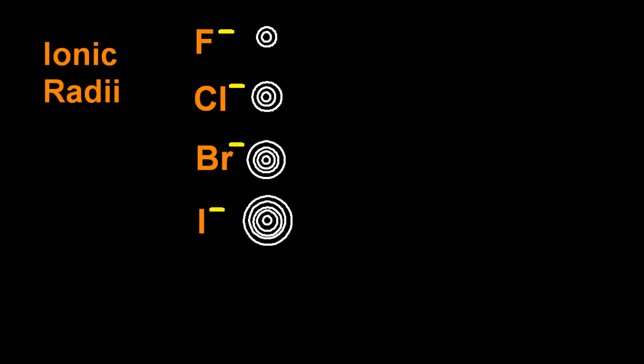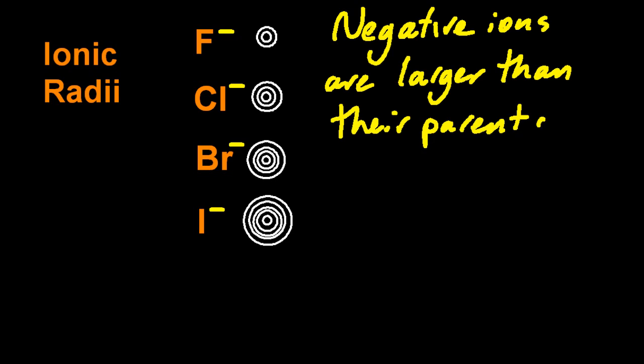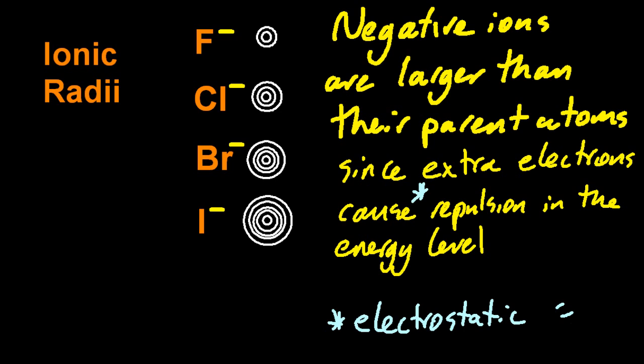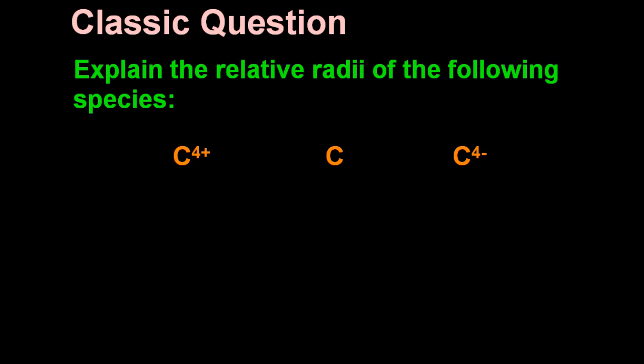Because there are more electrons now, more repulsion. In IB speak, negative ions are larger than their parent atoms, since the extra electrons can cause repulsion in the energy level. And maybe you want to use the word electrostatic there. That's essentially a negative repelling a negative, or a positive a positive.